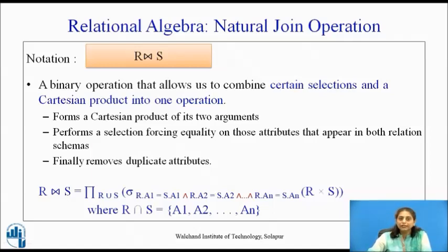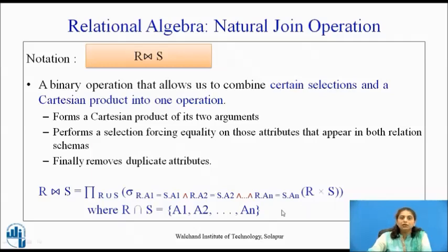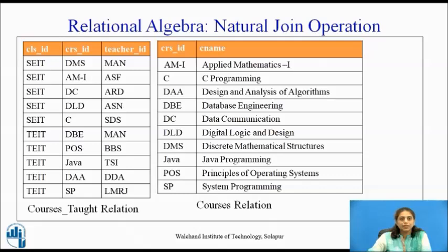So if r and s are two relations, r natural join s is equal to projecting the attributes of r union s, and performing the selection criteria on the attributes which are common in r and s on their Cartesian product. Let us see this with an example.